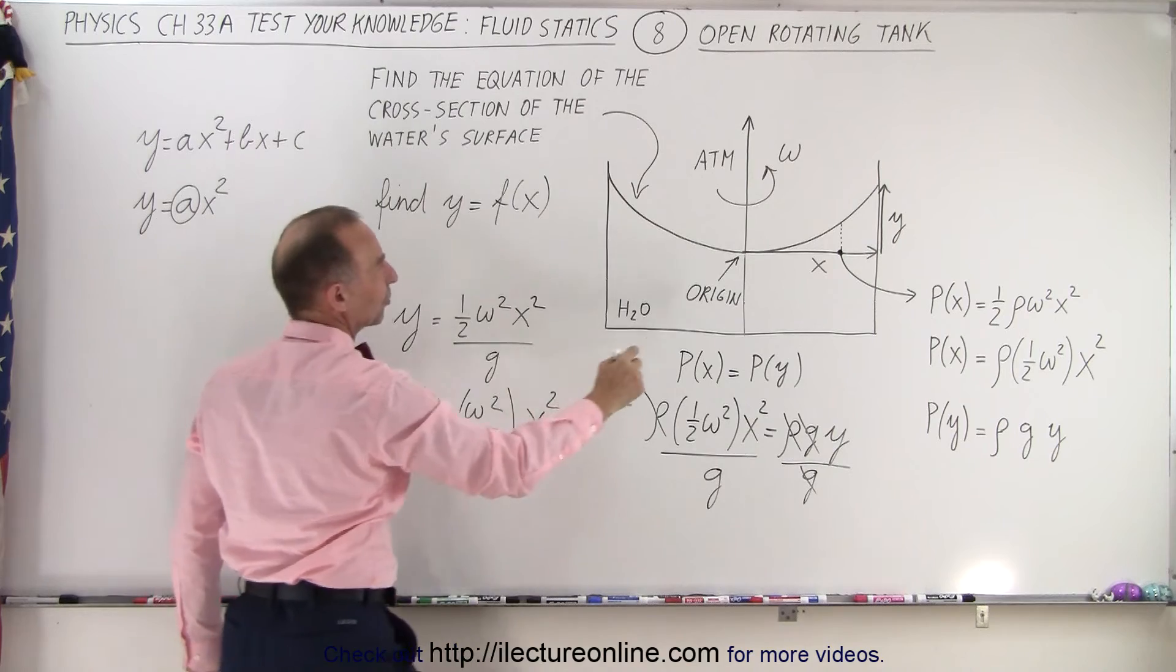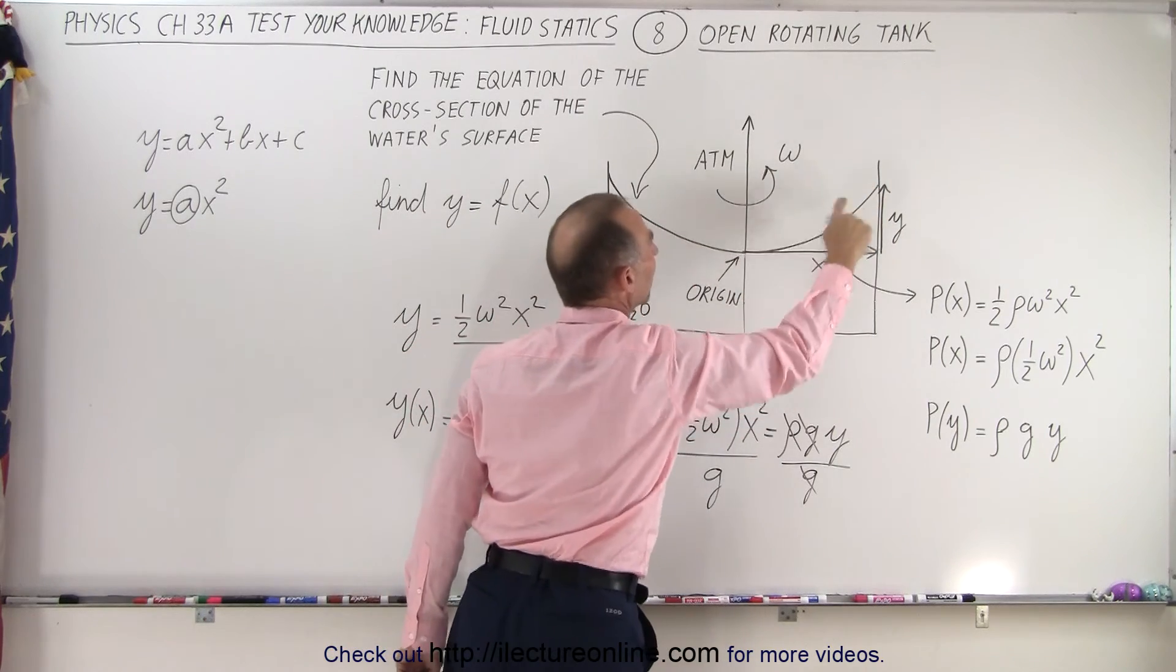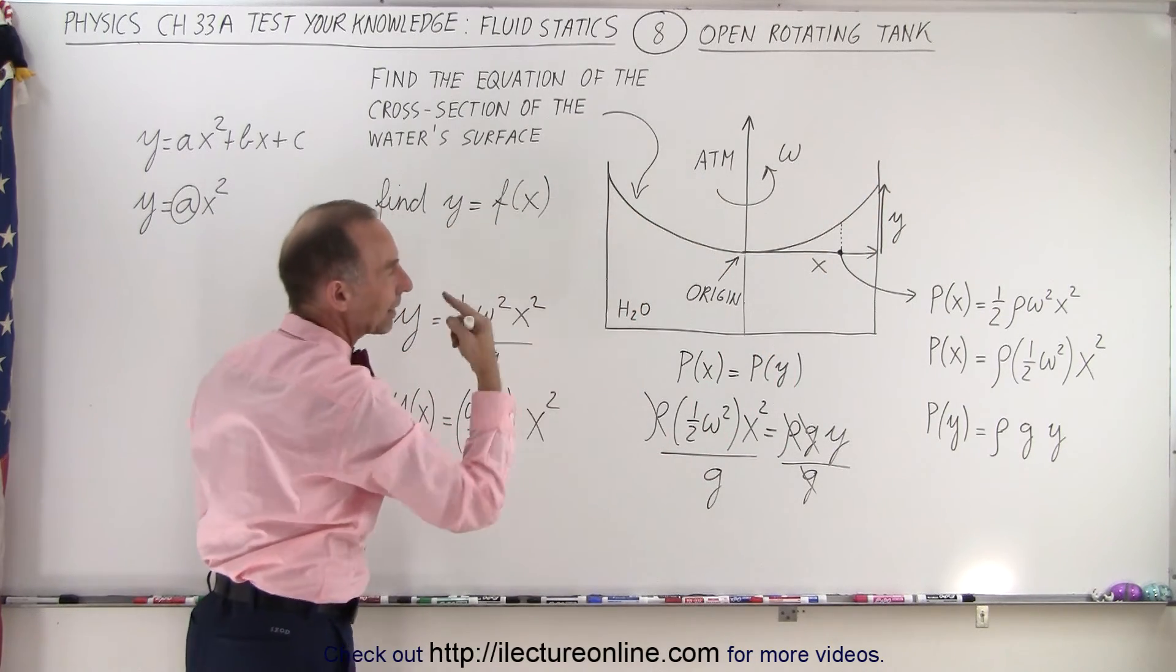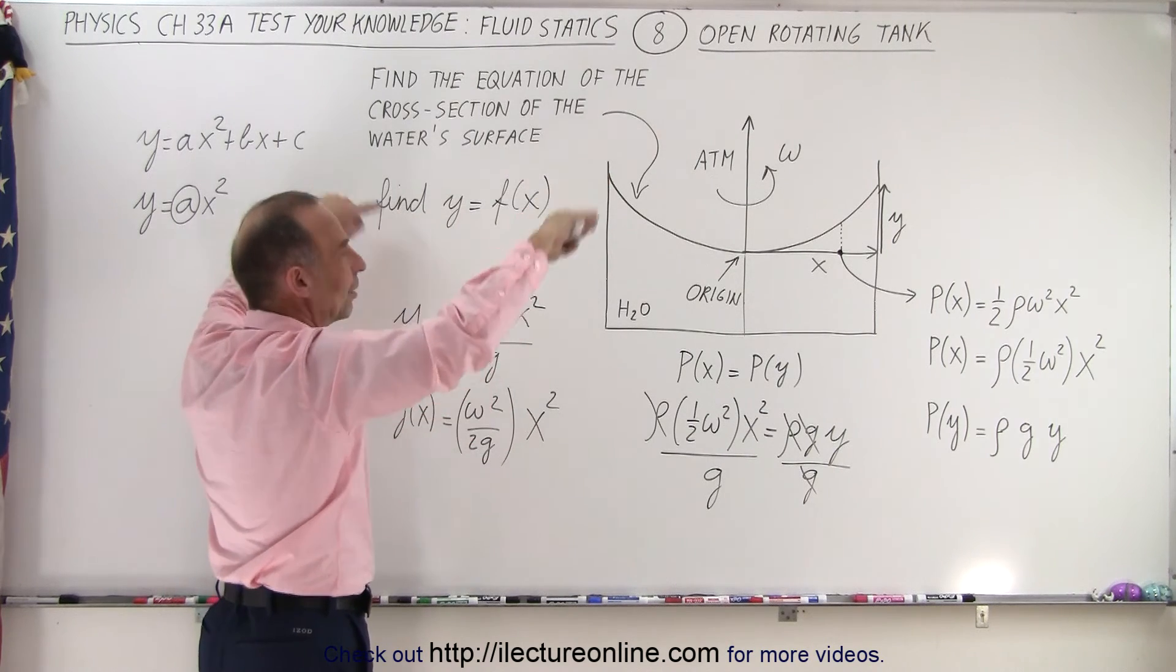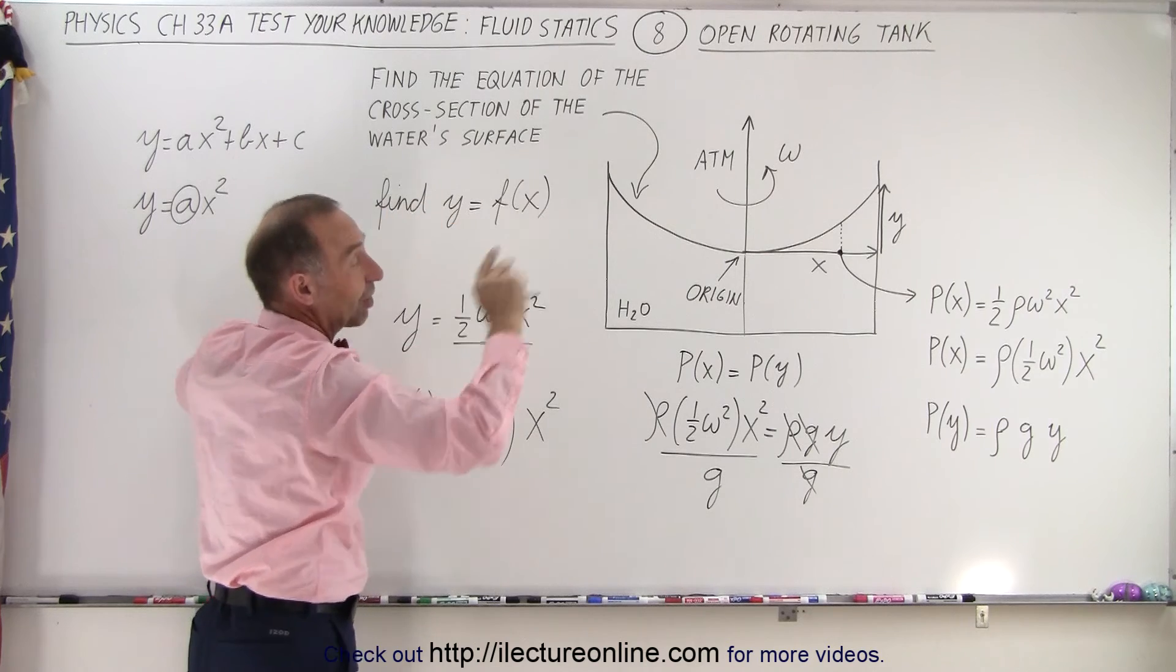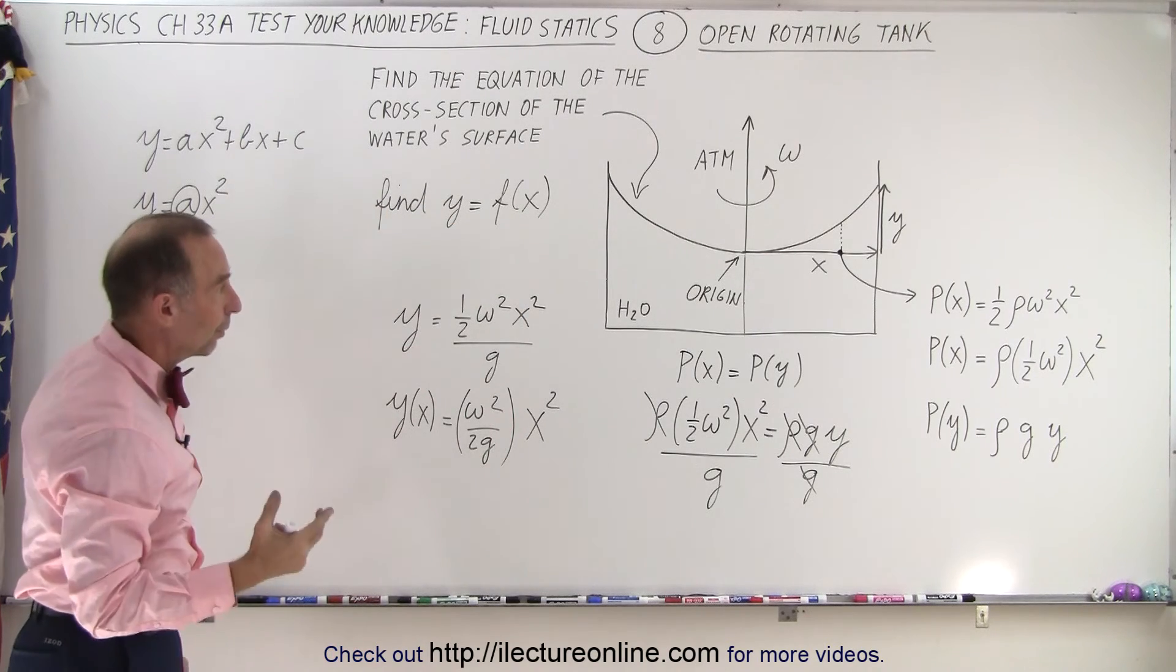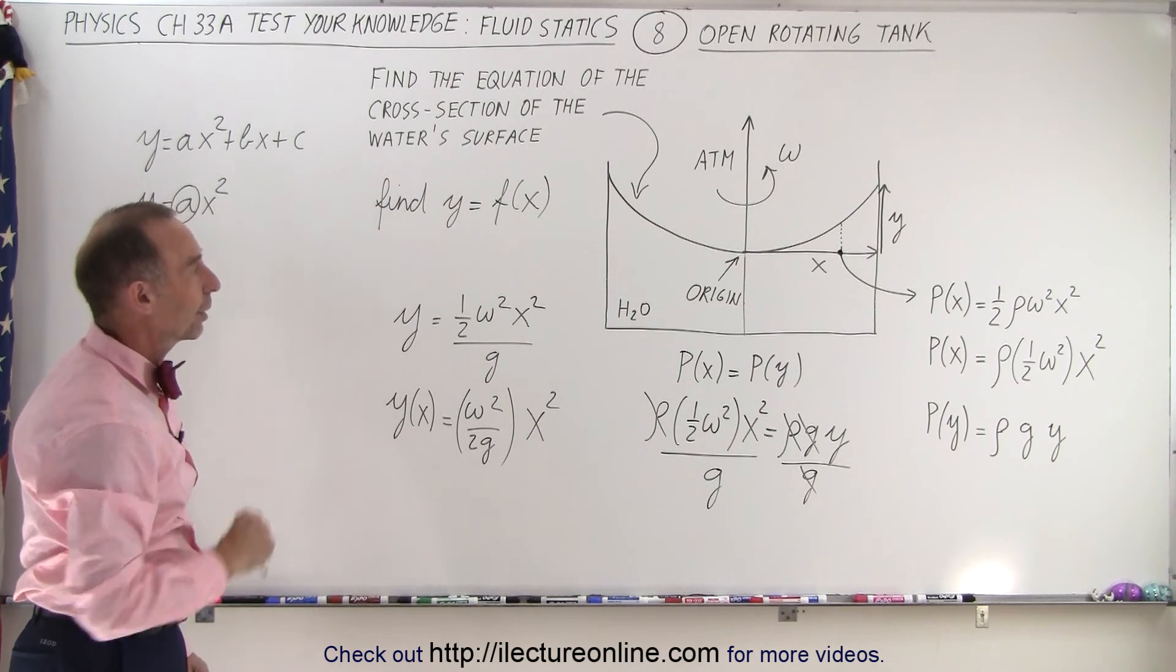In other words, we have ourselves the shape of a parabola. When you have water in a tank that rotates about its central axis, the water will bulge up, and the surface of water, at least a cross section of it, will represent a quadratic equation.